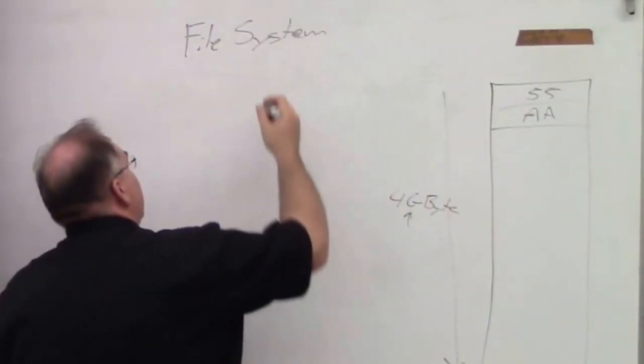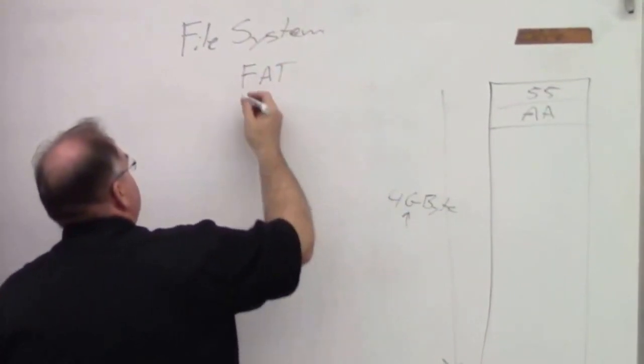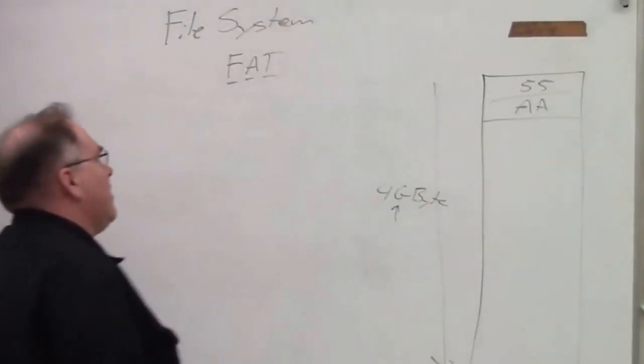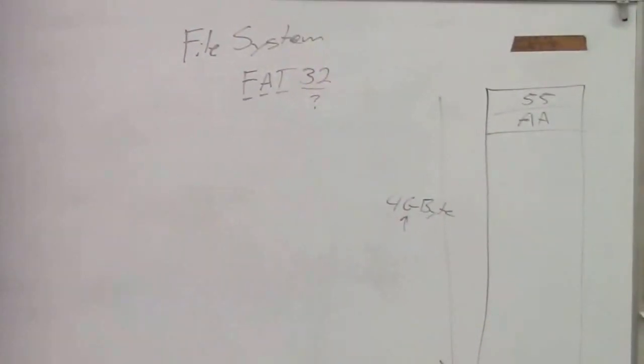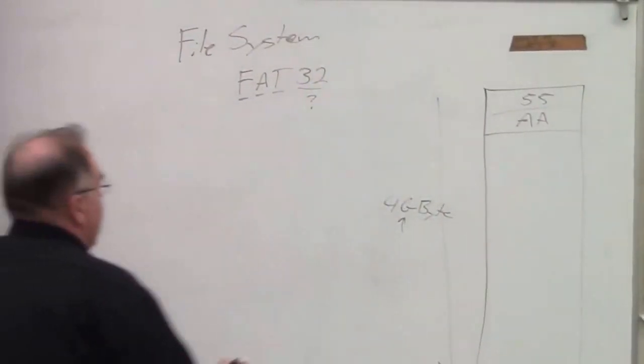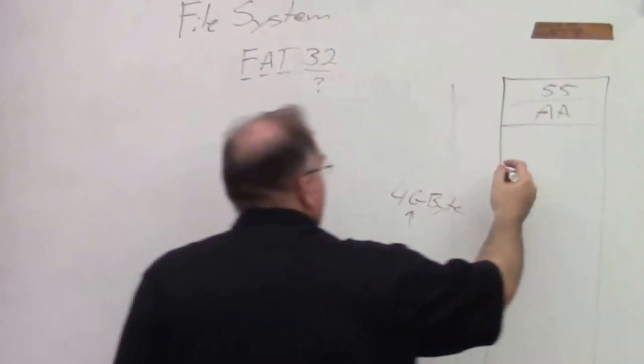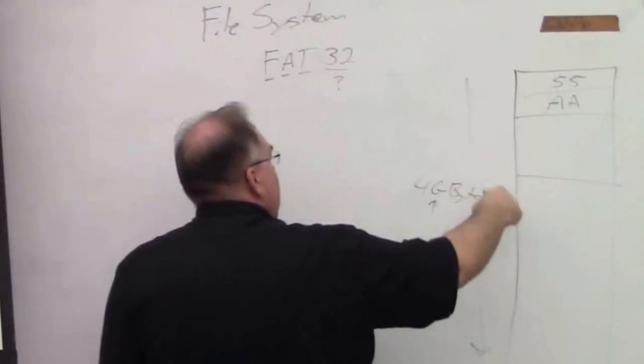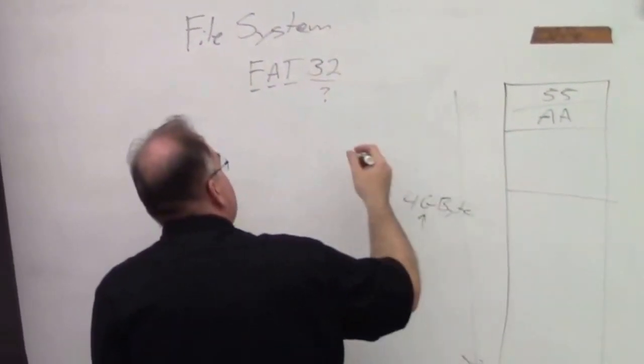The file system that we use on these cards is called FAT, which stands for file allocation table. Technically, I think we may actually use FAT32 or something like that. I think FAT or FAT32, either one will work. So what the FAT file system does is it takes a chunk of the memory of this card and it says, I'm going to reserve some chunk of this memory, and in this chunk of memory...